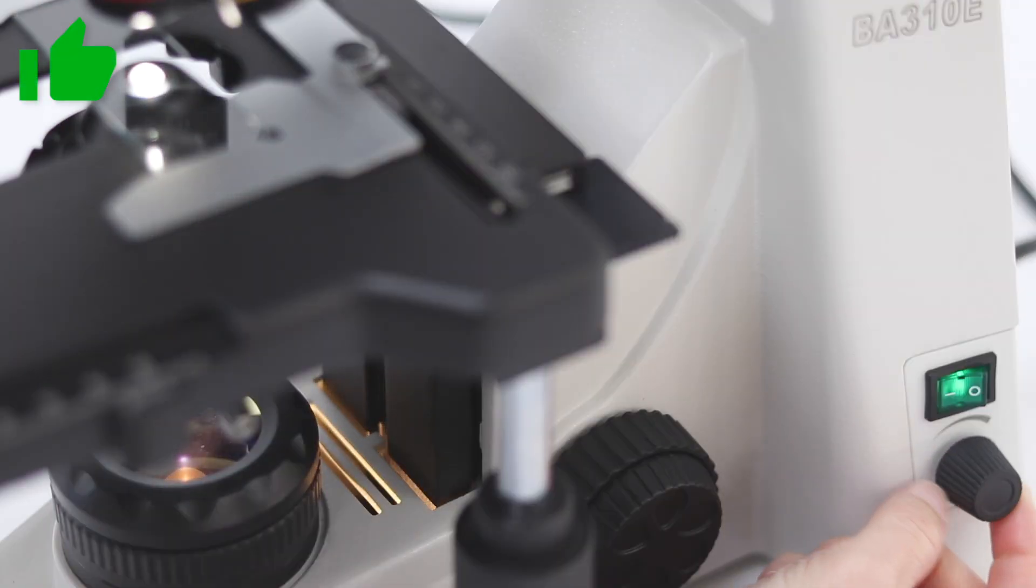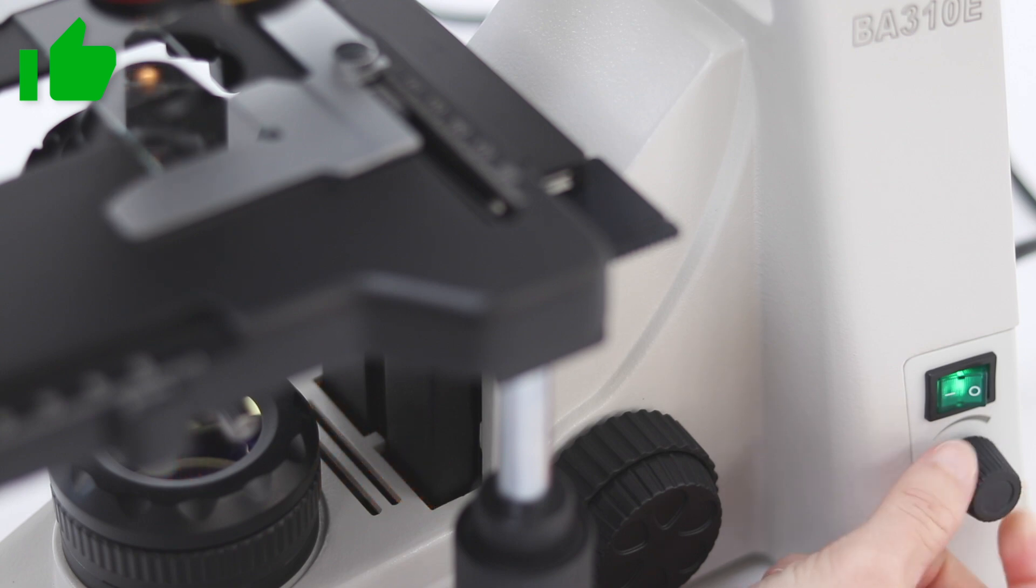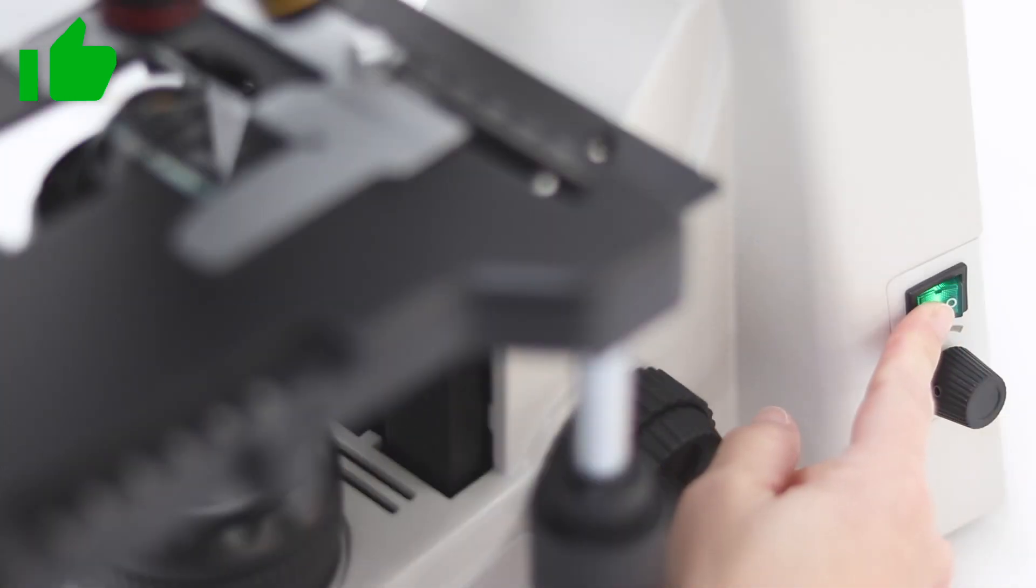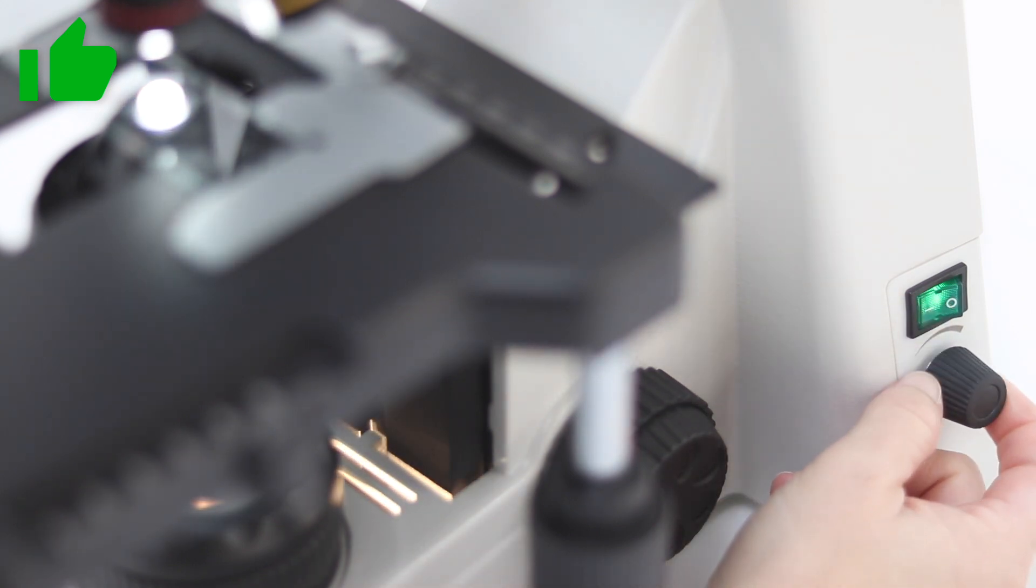After using the microscope, reduce the light intensity control to the minimum before switching it off. This way, you will extend the life of the bulb as when the light is switched back on, it won't suffer any power surge.